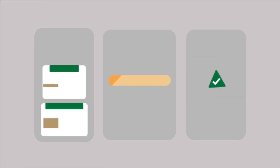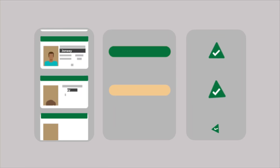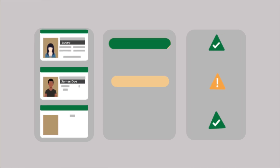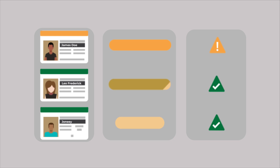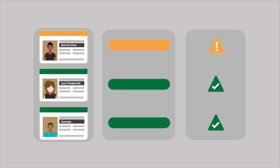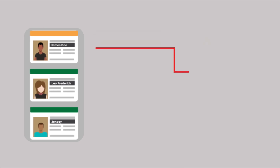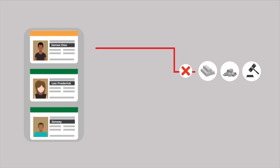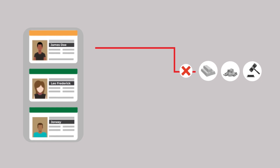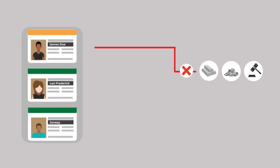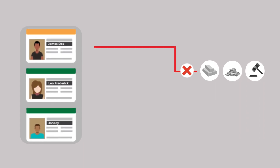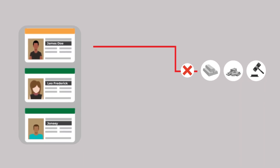If you identify a partial name match to any designated individual, entity, or group in the Local Terrorist List or UN Consolidated Lists that you are unable to verify, you must suspend without delay any transaction and refrain from offering any funds or services.